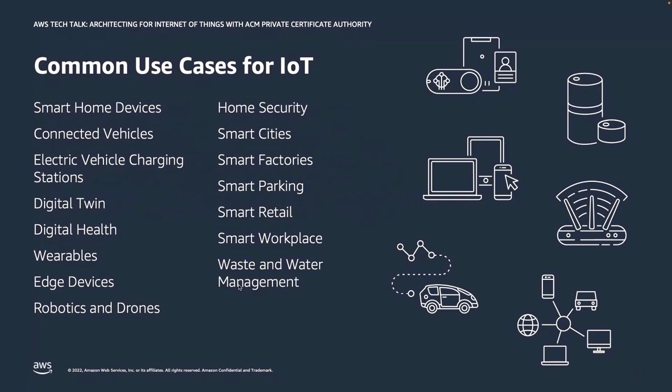IoT devices have exploded in popularity over the past decade. New use cases are constantly springing up, from smart home devices like Amazon Echo and Ring doorbells to automobiles as connected devices with more automation and over-the-air software updates. As the IoT industry continues to advance, these devices are becoming smarter, more powerful, and more capable, which also means the potential for misuse becomes greater. Security of these IoT devices should stay top of mind for both consumers and device manufacturers.